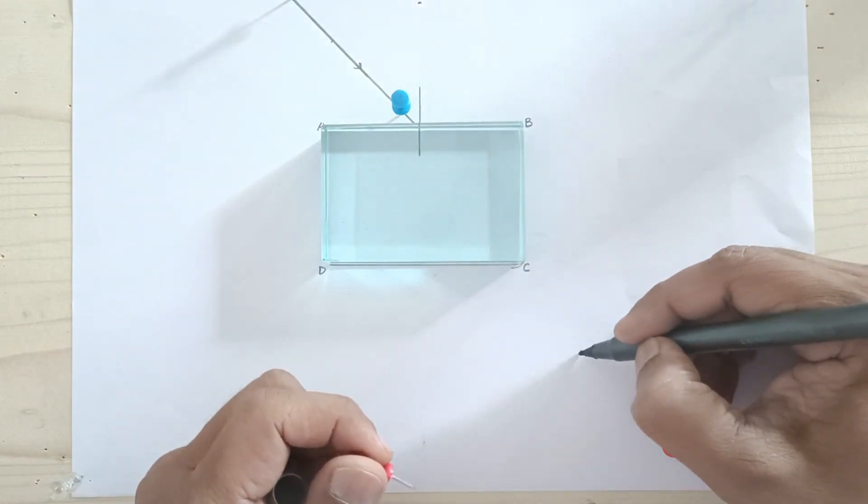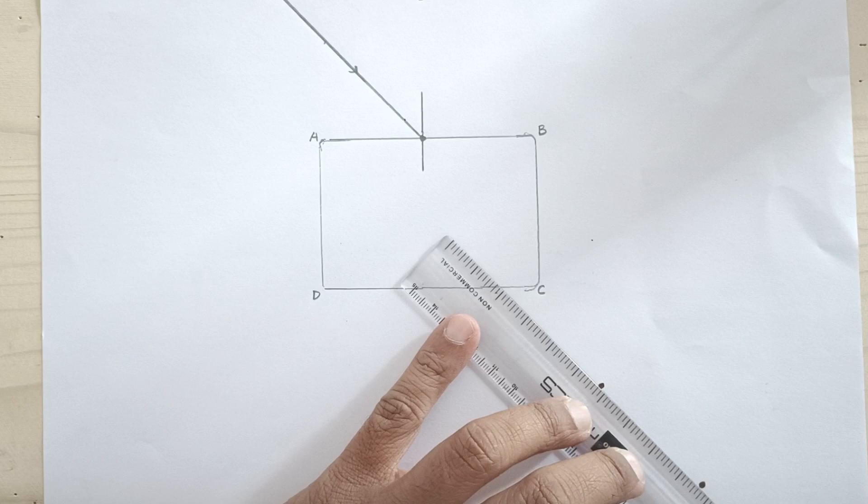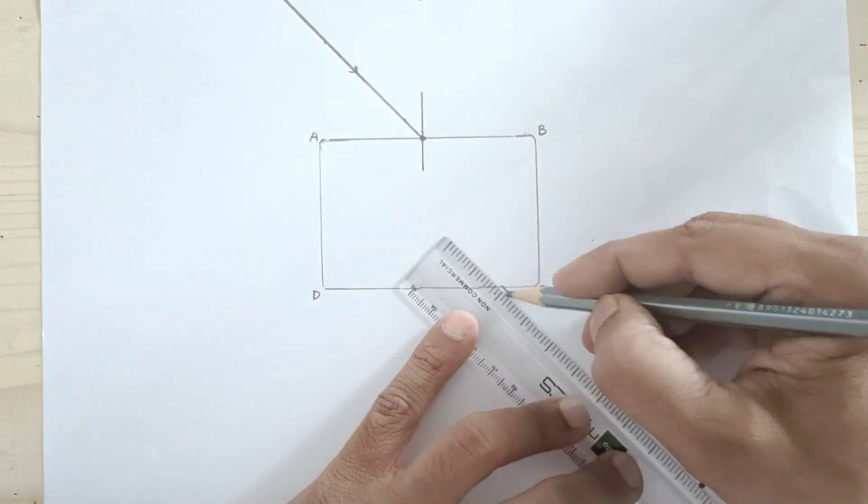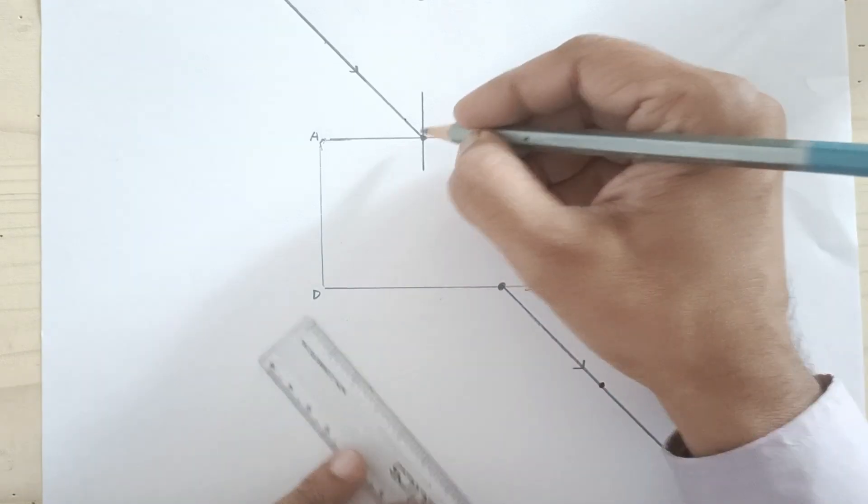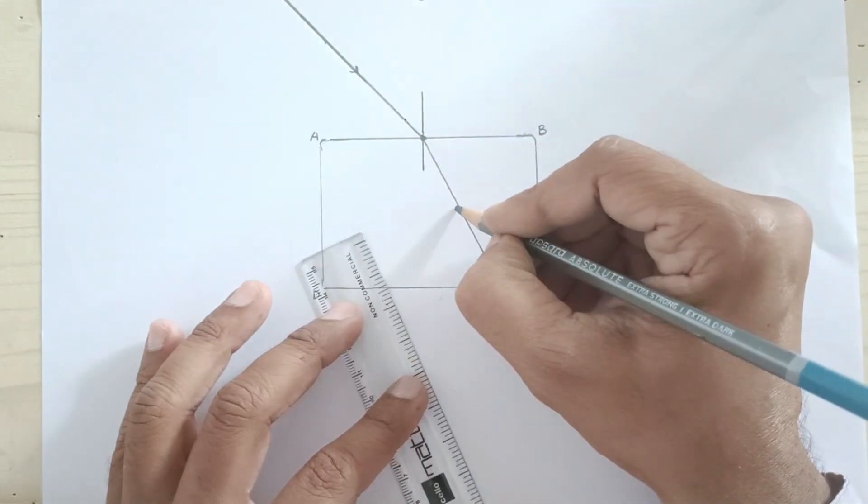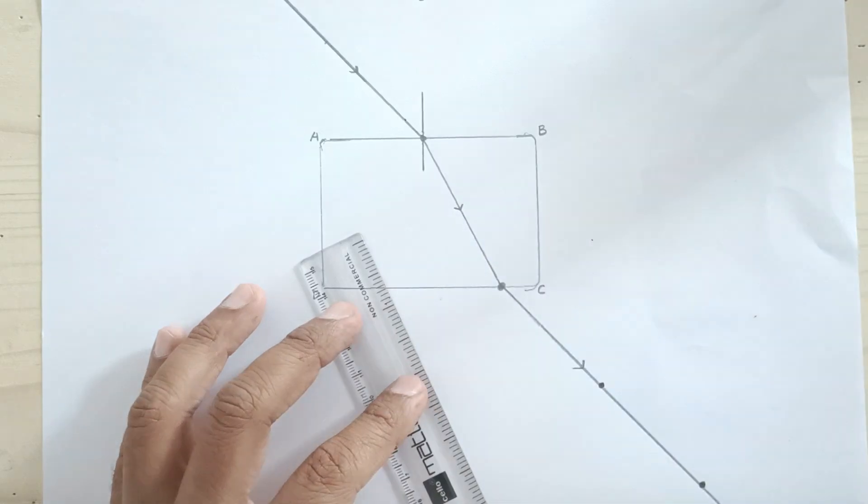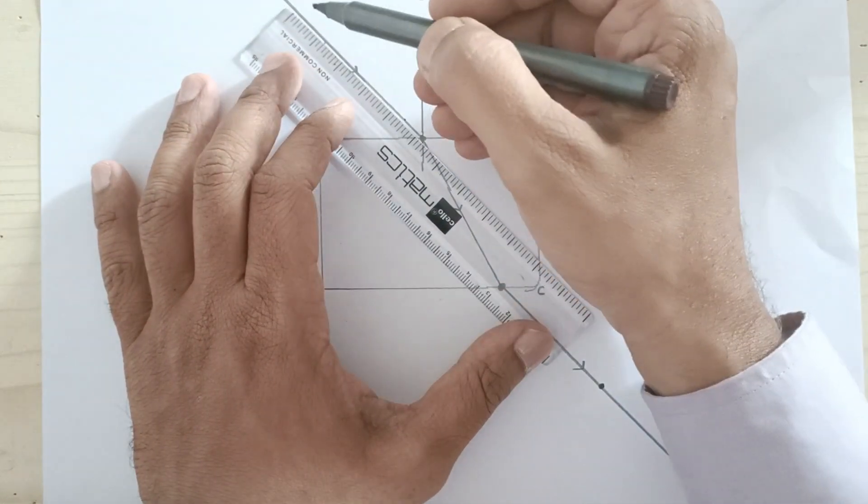Remove the softboard pins and mark the picked locations. Join these two points with surface CD. This becomes your emergent ray. Join these two points using a scale. This becomes your refracted ray. Extend the incident ray using the scale.